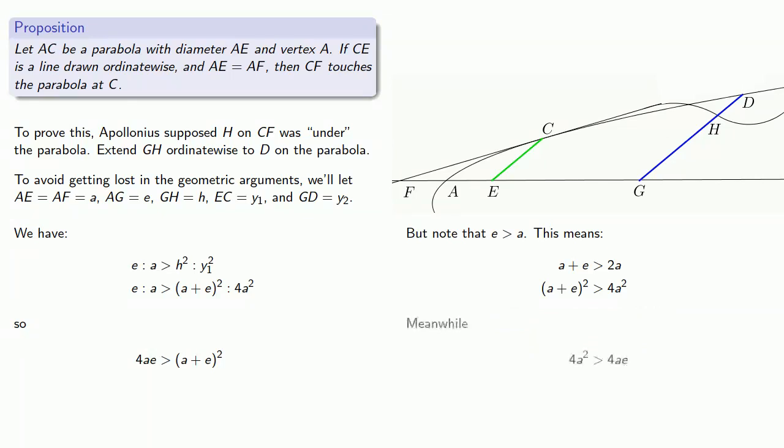Since A is greater than E, 4A squared must be greater than 4AE. And so A plus E squared must be greater than 4AE. And so this inequality is impossible.